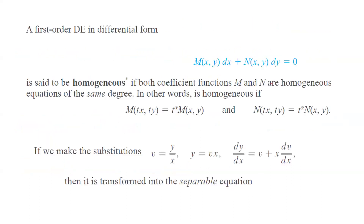So what is the use of a homogeneous function? A first-order differential equation of the form M(x,y)dx plus N(x,y)dy equals zero is homogeneous if both M and N are homogeneous functions of the same degree. In that case, we use the substitution v equals y over x, or y equals vx, which gives dy/dx equals v plus x times dv/dx, transforming the original equation into a separable differential equation.